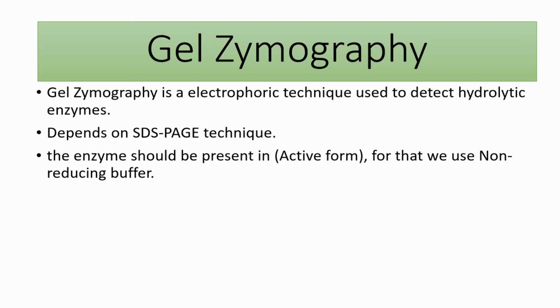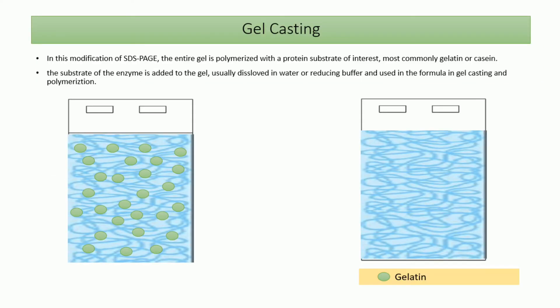Gel zymography is an electrophoretic technique that depends on electrophoresis to detect hydrolytic enzymes. In this case we must maintain the proteins in their active form, so we don't use any reducing agent, because we want to detect the activity of the hydrolytic enzymes. In the following slides, SDS-PAGE will be shown on the right and gel zymography on the left.